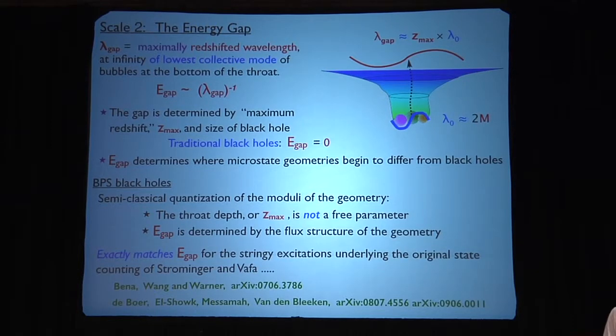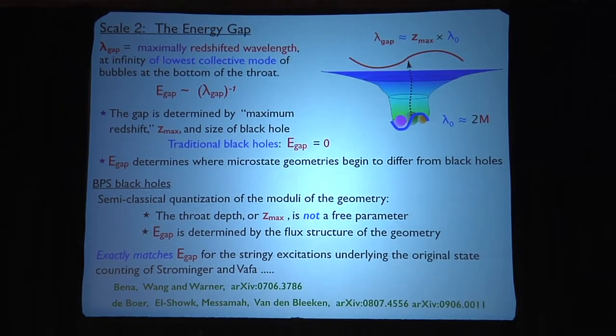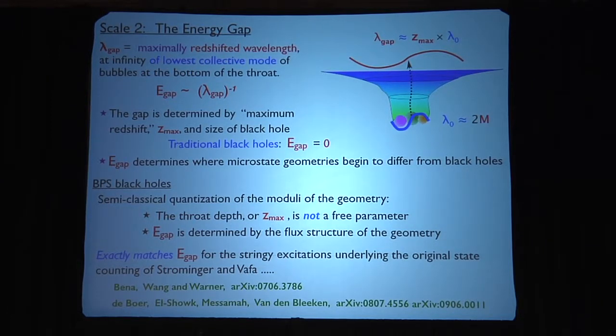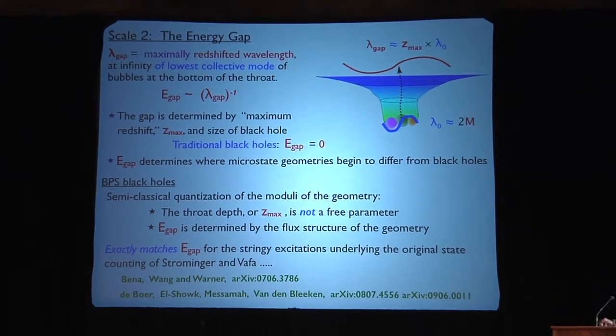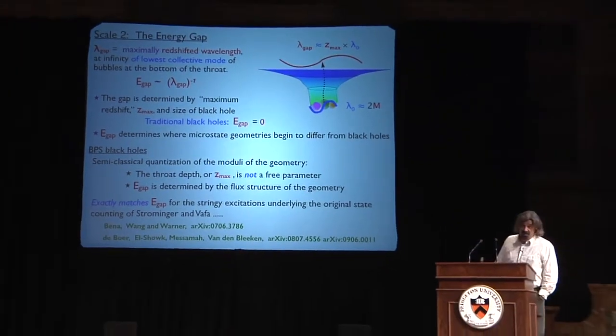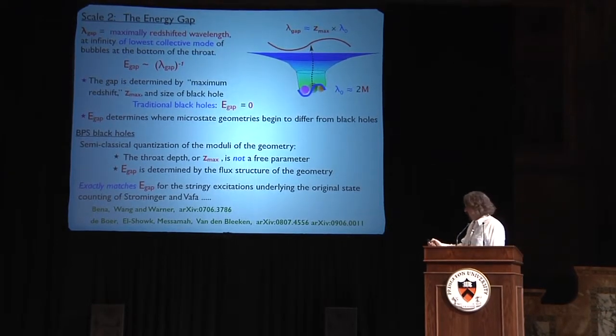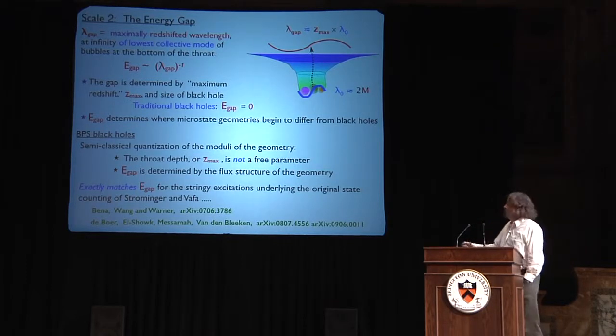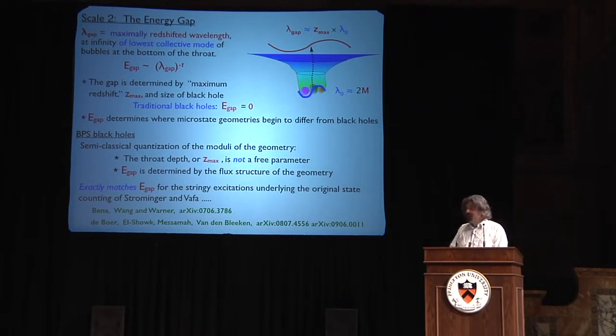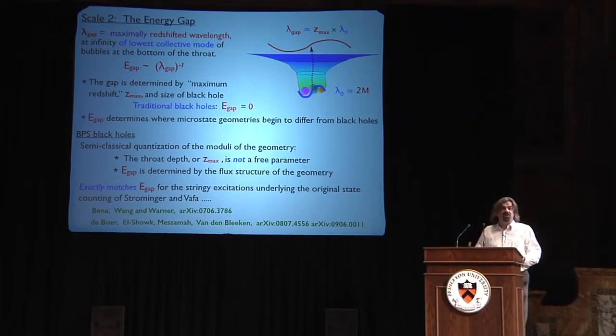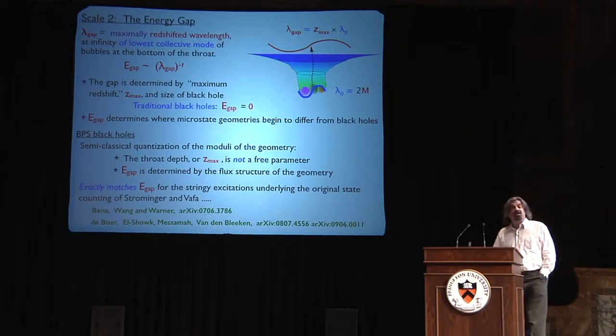For BPS black holes, we have actually analyzed this in great detail. It turns out this is not a free parameter. Classically, it's free. But quantum mechanically, you can show that the moduli of the geometry and the throat depth are fixed precisely by quantization of the semi-classical moduli space. And you can also show that it exactly matches the correct gap energy for the corresponding D1, D5, P black hole. So in other words, the holographic field theory of this configuration is producing the correct gap energy for the conformal field theory that Strominger and Vafa calculated the microstates on many years ago. So this is in very good shape. But this is for the BPS, as I say. But in general, there's going to be such a gap energy.